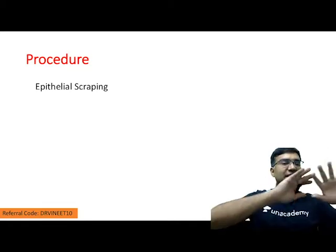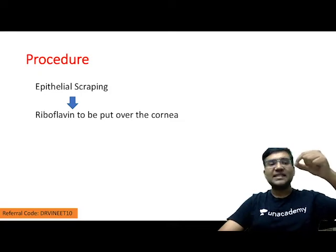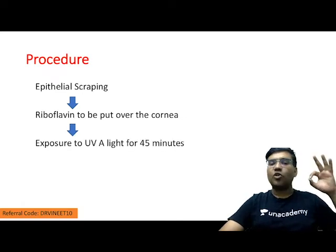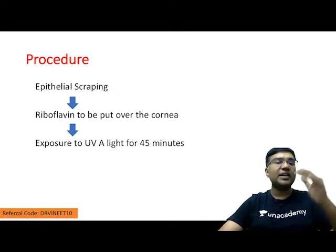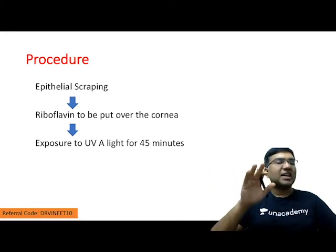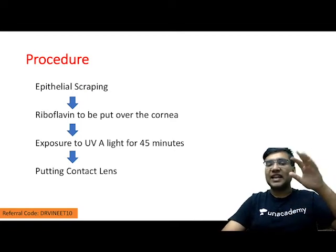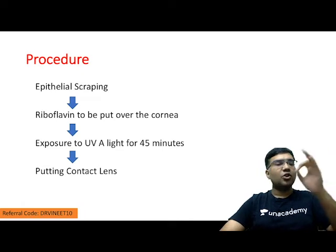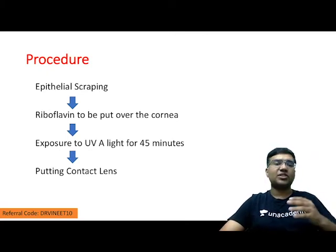The procedure: first we remove the epithelium — this is called epithelial scraping. Then we put riboflavin drops over the de-epithelialized cornea drop by drop. After the riboflavin drops, we use UVA light of 370 nanometers for 30 to 45 minutes — conventionally for the PG exam remember this duration. There is also an accelerated C3R which takes only 10 minutes. After the procedure, because the epithelium is scraped and the patient may have watering and pain, we put a bandage contact lens to protect the epithelial surface.